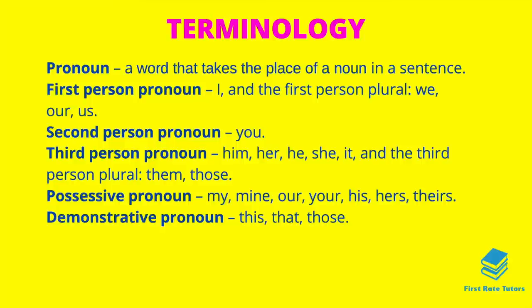Pronouns are words that take the place of a noun in a sentence. The first person pronoun is 'I', and the first person plural pronouns are 'we', 'our', or 'us'. The second person pronoun is 'you', and the third person pronouns are 'him', 'her', 'he', 'she', 'it', with third person plurals 'them' or 'those'. A possessive pronoun shows ownership — mine, our, your, his, hers, and theirs. A demonstrative pronoun points out objects — this, that, or those.